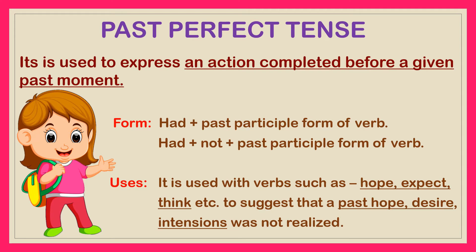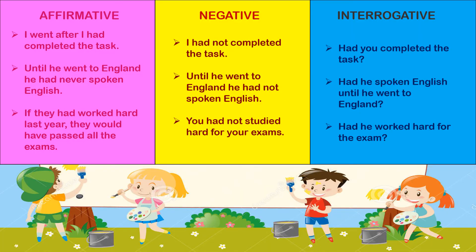Past perfect tense is used to express an action that is completed before a given past moment. The helping verb used is 'had' along with the subject plus the past participle form of the verb. For example: 'I went after I had completed the task.' In negative, 'not' is added after 'had.' For interrogative sentences, 'had' is placed before the pronoun.